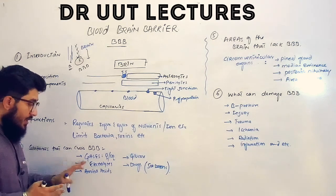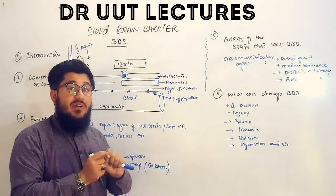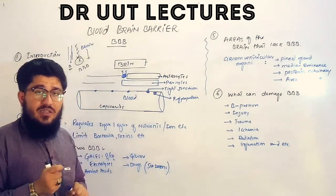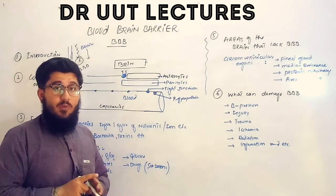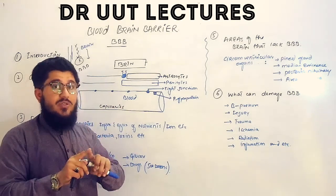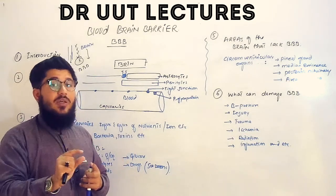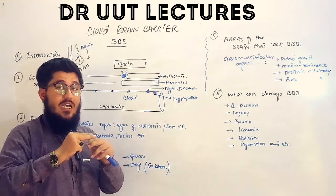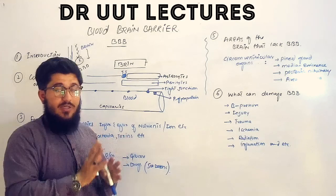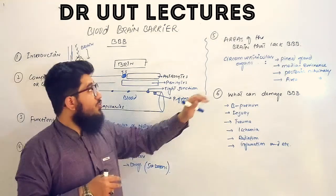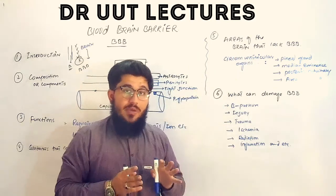Now let's look at the substances that can cross the blood brain barrier. These include gases like oxygen and carbon dioxide, electrolytes, amino acids, glucose, and drugs with a size of 500 Daltons or up to 800 atomic mass units. Lipophilic drugs can cross the blood brain barrier, as can small-sized drugs. If a drug is large or polar, it is difficult for it to cross the blood brain barrier.